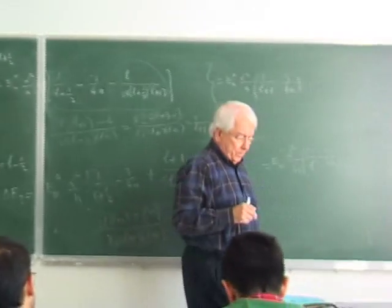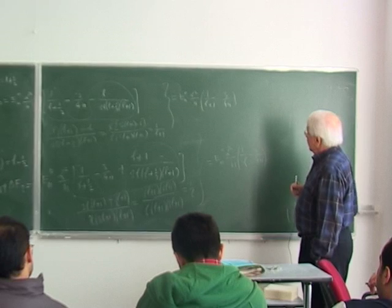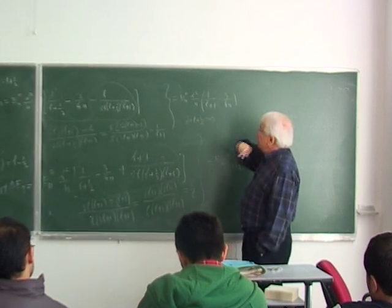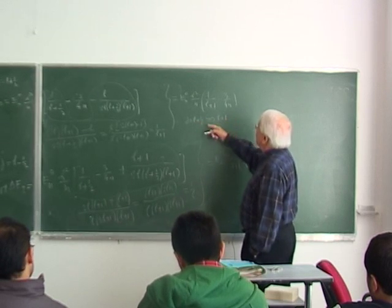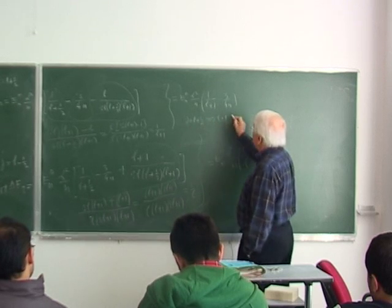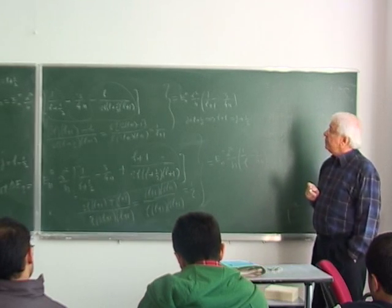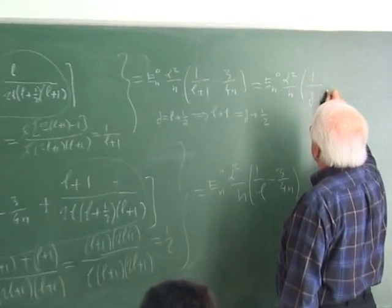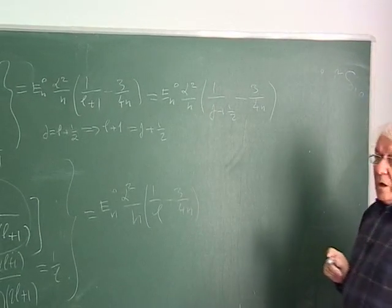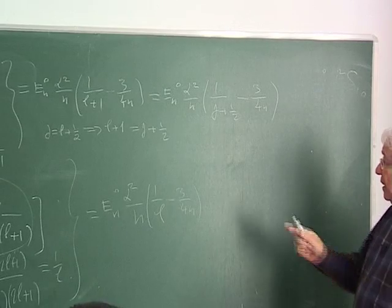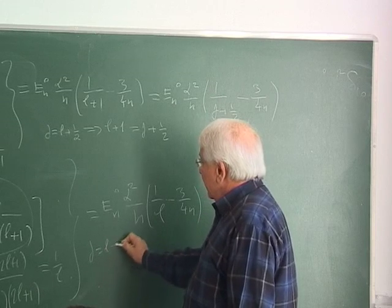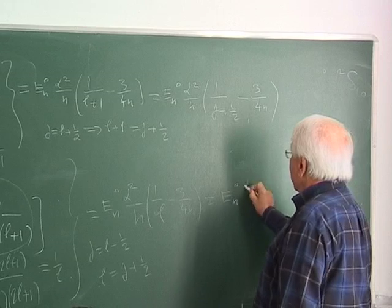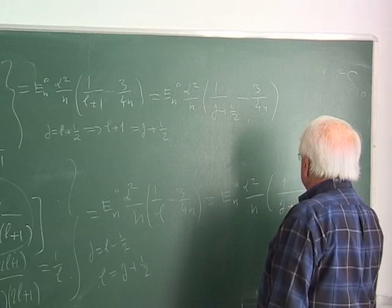Are these the same? Let me try to convert them into J. Here, this corresponds to J equals L plus 1 half. Therefore, if I solve for L plus 1, I have to add 1 plus 1 half to the left. So this is really equal to J plus 1 half. If I now substitute this in, I have En0 times alpha squared over N times 1 over J plus 1 half, minus 3 quarters times 1 over N. Similarly, here J equals L minus 1 half, so L is J plus 1 half. The result is 1 over J plus 1 half minus 3 quarters.